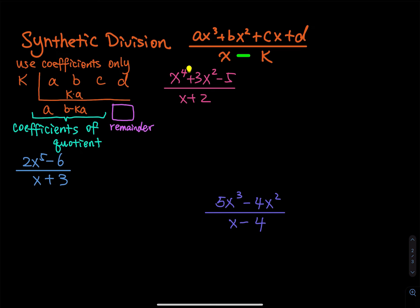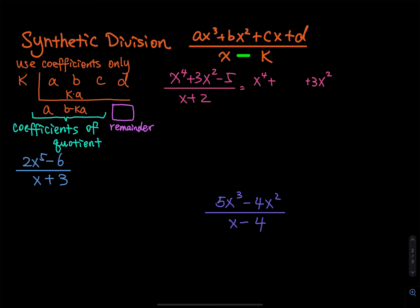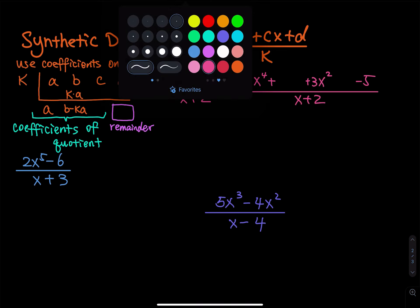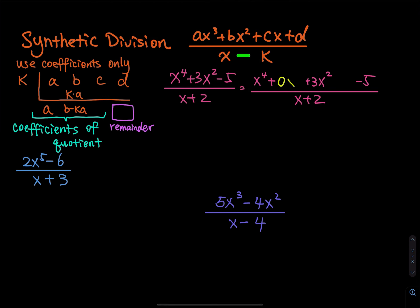For the dividend, you have the fourth power; the third power is missing; you have the square; the first power is missing; and then you have a negative five. So when you write this, you have to prepare: x to the fourth, then the third power is missing, then you have the second power, the first power is missing, and then you have minus five. This is divided by the binomial x plus two. So let's complete that using yellow — you have zero x to the third and then plus zero x squared. You have to complete the missing degrees.